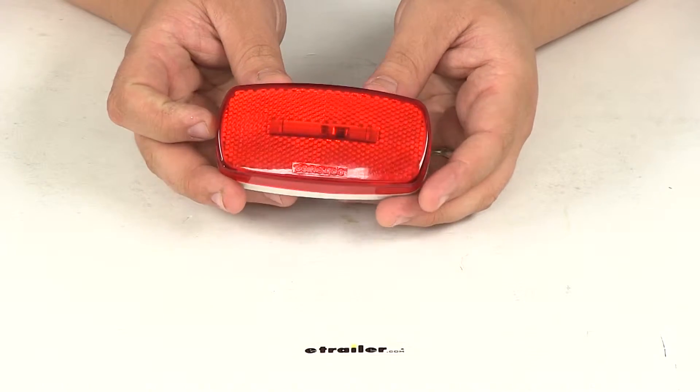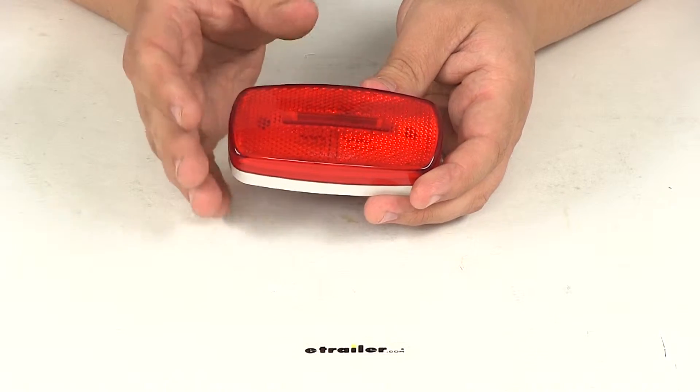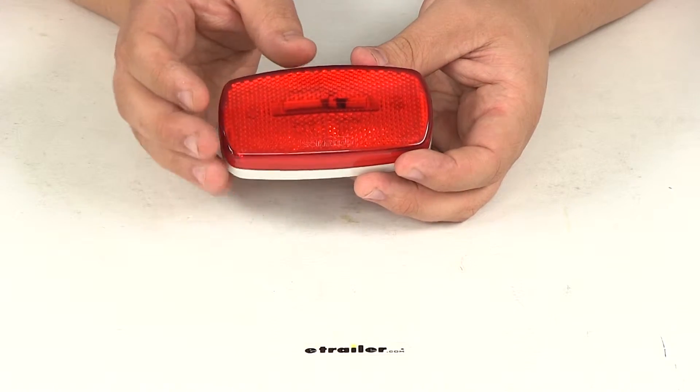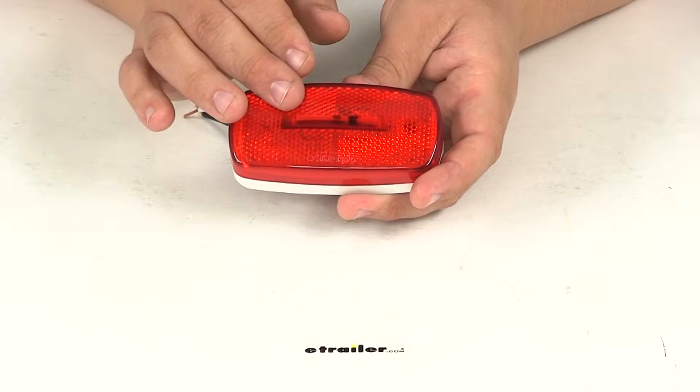LEDs are going to make great replacements for incandescent lights. They're going to burn brighter, last longer, about 50 times longer. They're much more energy efficient and you don't have to worry about replacing bulbs or brittle filaments.